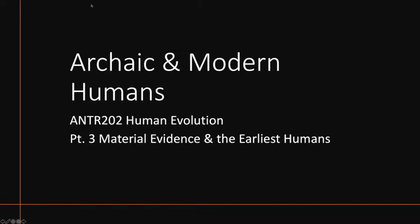This is the fifth lecture in Anthro 202, Human Evolution. In this part of the course, we've been looking at material evidence in the earliest humans. For this particular lecture, the topic is thinking about what we call in anthropology archaic humans and modern humans, trying to understand this concept, the evidence and data behind it, and how this supports a theory of evolution.